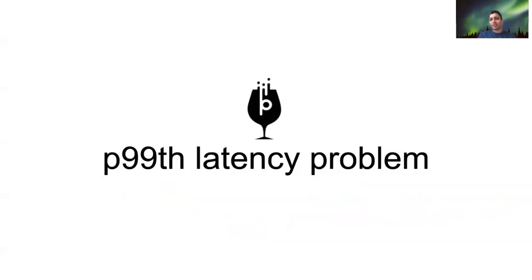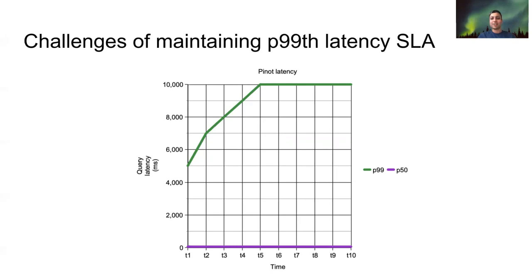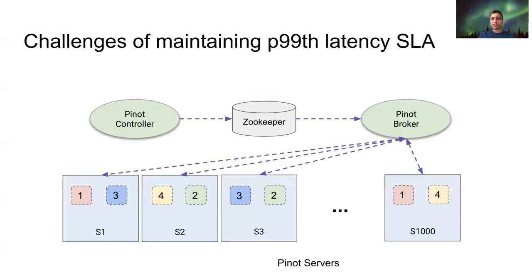Let's shift gears and discuss things when they go wrong, especially with large scale deployments of Pinot. For most Pinot deployments, things will be running fine out of the box, but in large scale cases your latency graph might look something like this. Your 50th percentile latencies are actually doing fine, somewhere between 50 to 100 milliseconds, but your P99 latency is actually quite bad — at some point it starts timing out at 10 seconds. Let's take a look at why this could happen.